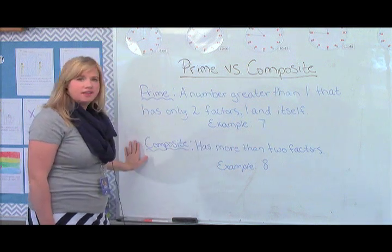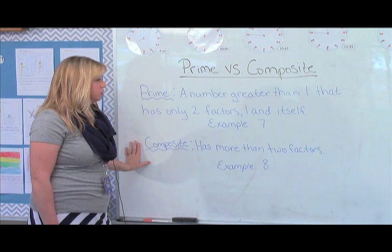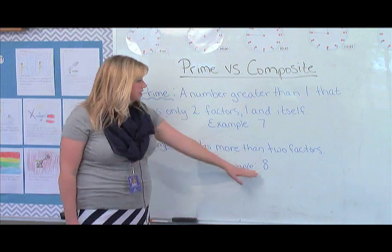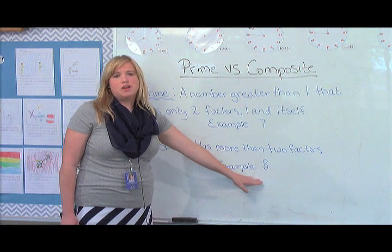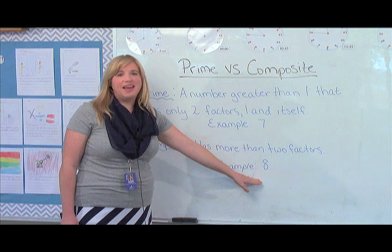Then we look at composite numbers. These have more than two factors. An example is eight because you could say one times eight or two times four to make the number eight.